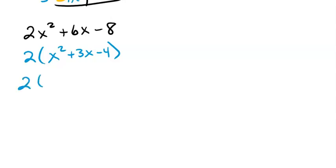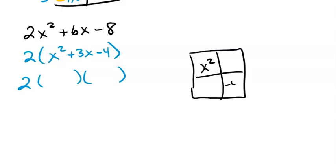So now I'm going to try to figure out what two binomials multiply to give me the x squared plus 3x minus 4. I'm going to leave the 2 in front because it's still important, but it's not going to be part of what I put into the box. So I have an x squared and a minus 4, and I want these two to add up to give me a positive 3x.